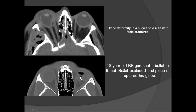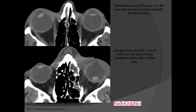An 18-year-old playing with a BB gun was shot from 6 feet; the bullet exploded and part of it ruptured his eyeball. In another case, the lens is not in the right location — normally centered in the anterior eye, here it is dislocated, and in this case so severely dislocated it's called complete subluxation of the lens.